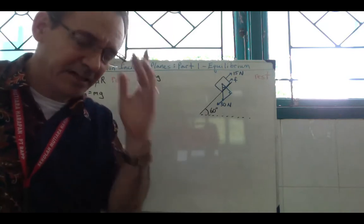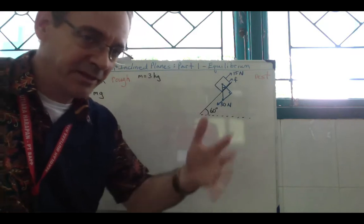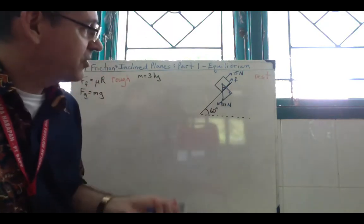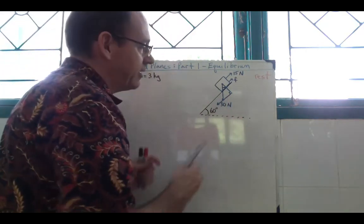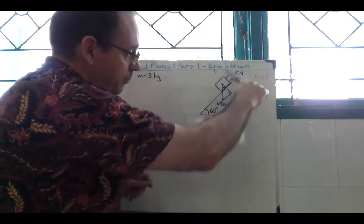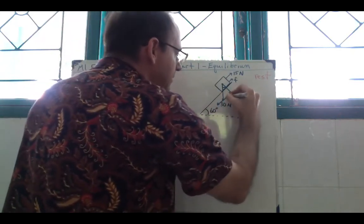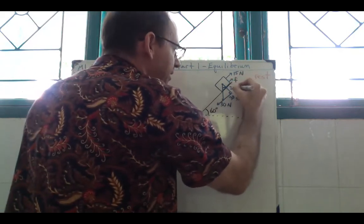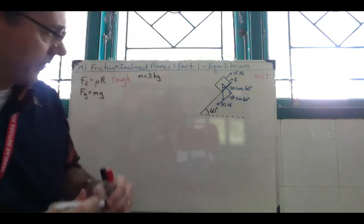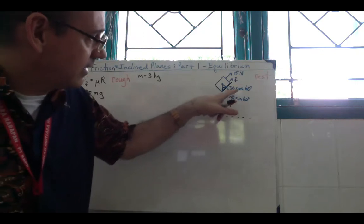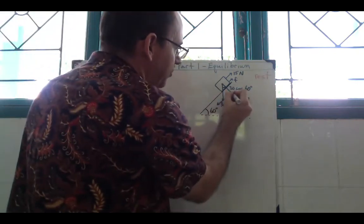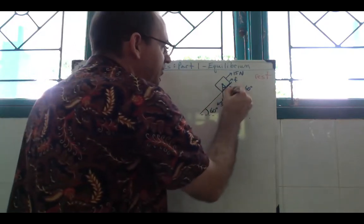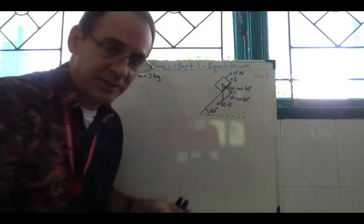I draw a vertical line and then make a right angle with a horizontal line, forming a right triangle. The 30 newtons is going down, and here we make a right triangle going parallel and perpendicular to our plane. The angle inside that triangle is 60 degrees — the same as the incline. So the component parallel to the plane is 30 sin(60), and the perpendicular one is 30 cos(60). The perpendicular component also represents the normal contact force pushing back up.